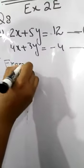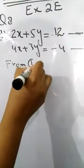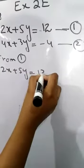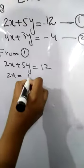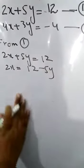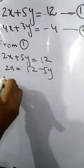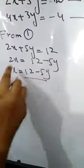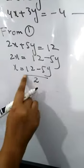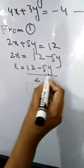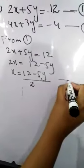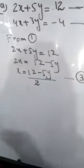Here you can see there are two equations. From equation 1, you will get the value of any variable. 5y would be negative when we shift this to the other side of the equation. 12 minus 5y, divided by 2 when we take this to the other side of the equation. That would be called equation 3.